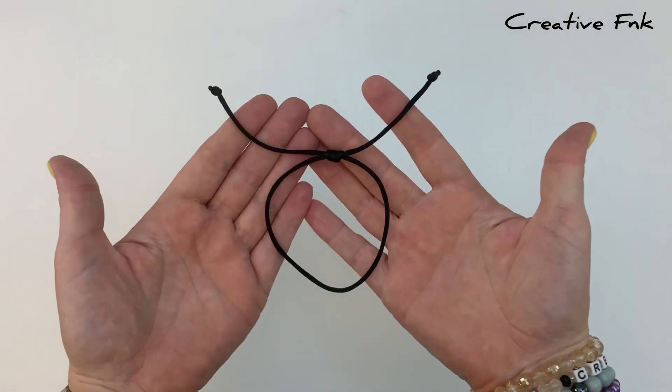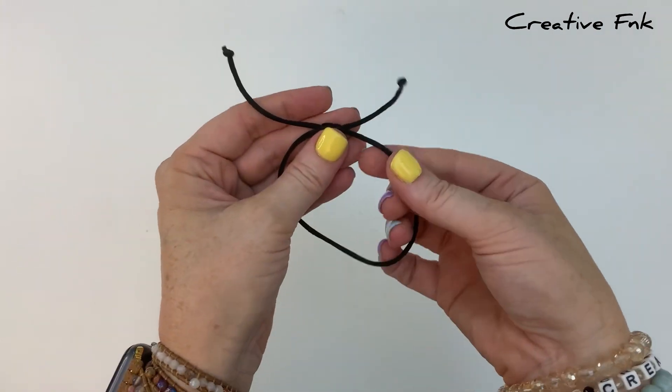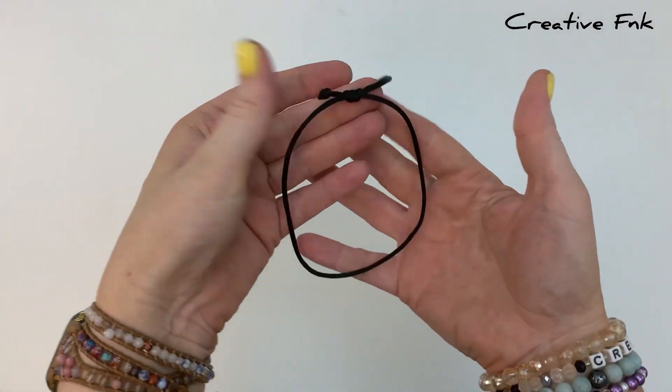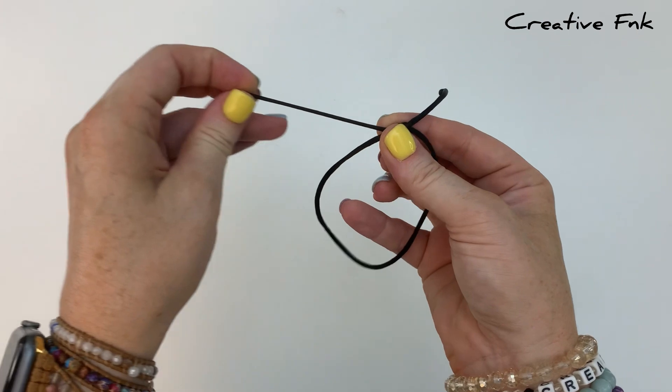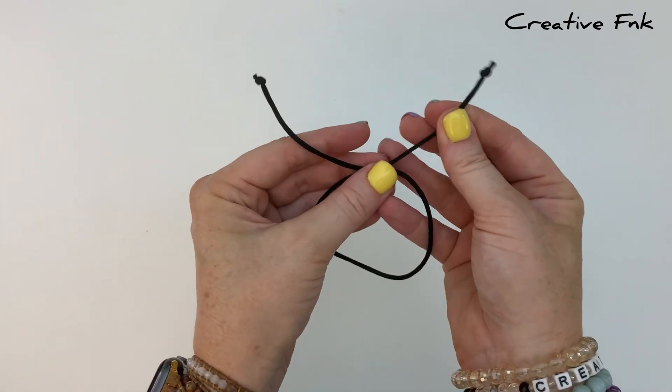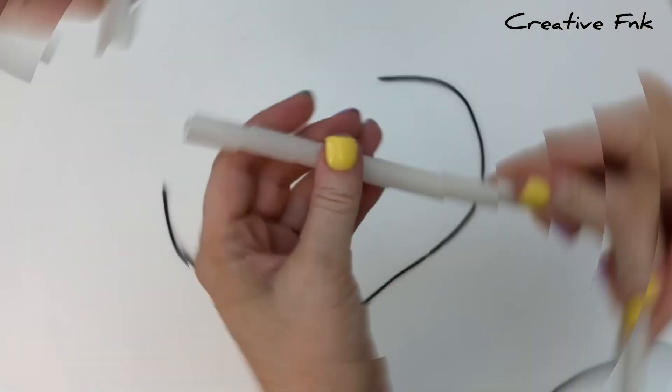In this video we're making a simple adjustable sliding knot bracelet with a barrel or tube knot. This design has the knot in the center there and the thread slides through the middle to adjust your bracelet.